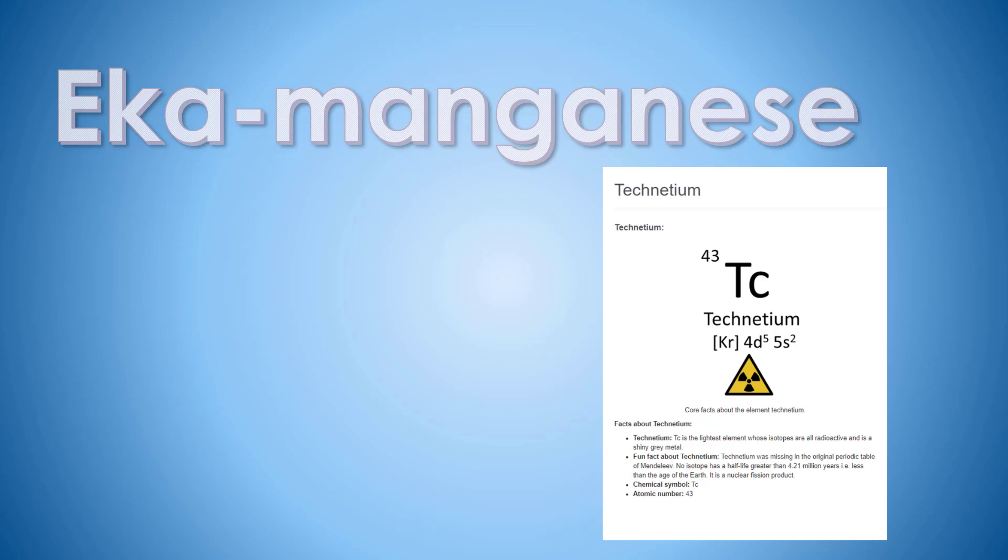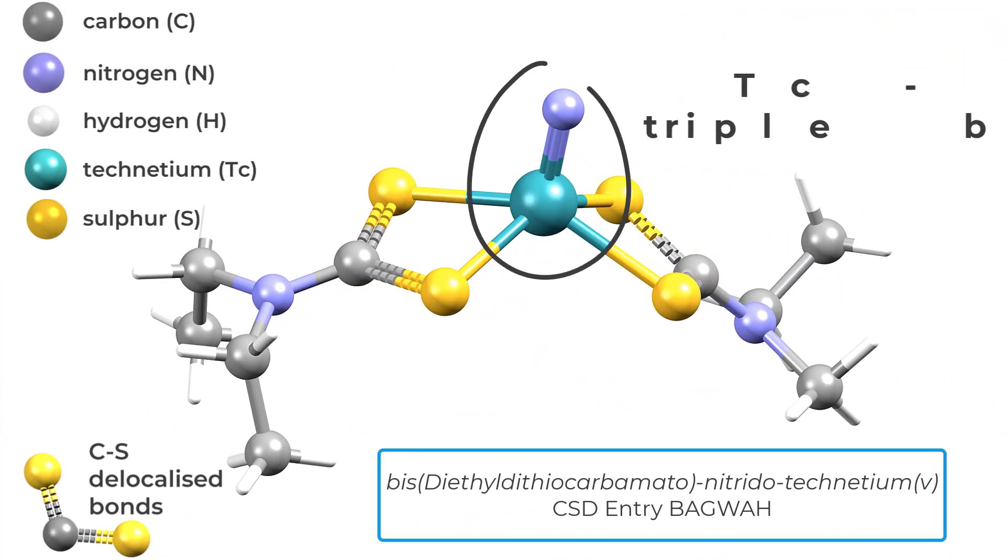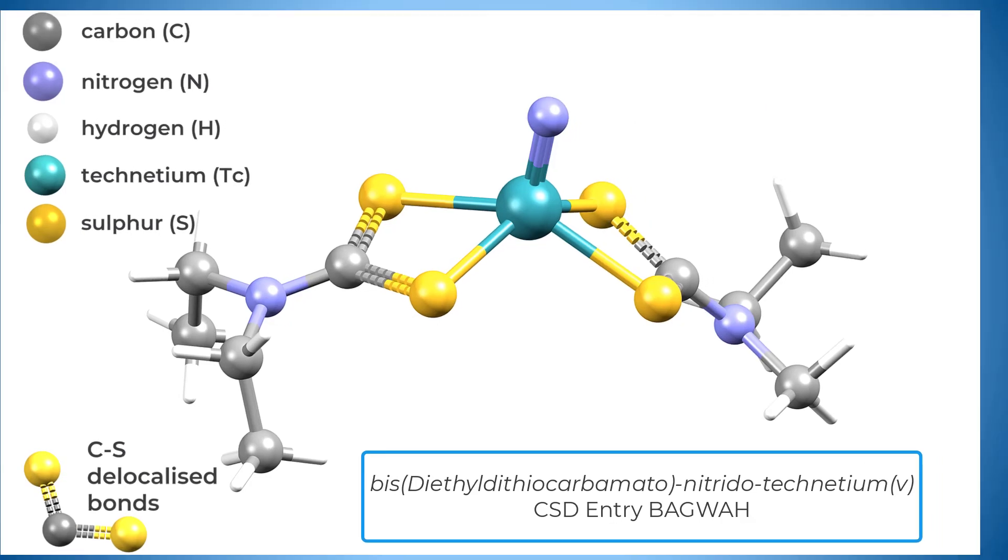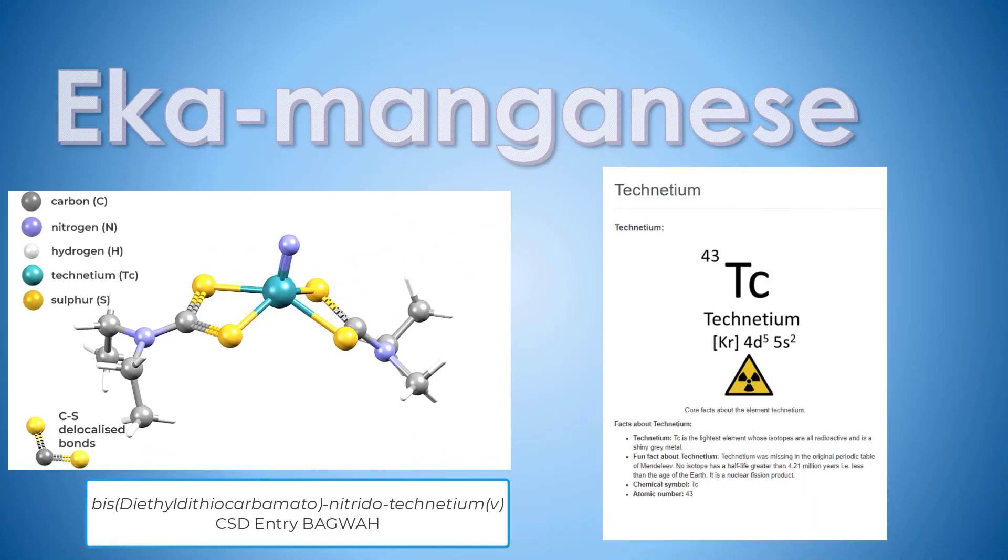Because of its radioactivity, it's been a huge challenge for chemists and crystallographers to investigate the structures technetium forms. Things we might think of as common, such as its triple bond with nitrogen, were only observed for the first time in 1981.